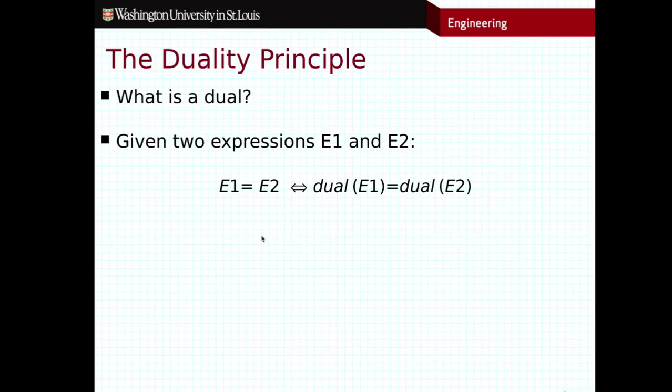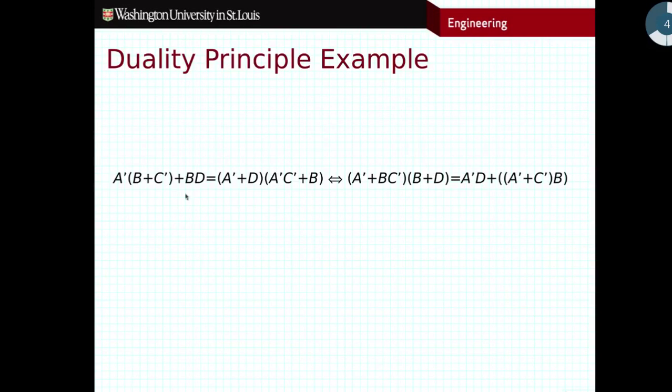And so what this allows us to do is construct the duality principle that states if I have two expressions that are equivalent to one another, expression one is equivalent to expression two, then the dual of expression one is also equivalent to the dual of expression two. Let me show you an example of how this works. On the left side here, I see an expression, A' ANDed with B or C', or B and D. And here I've stated another expression that I'm claiming is equivalent. Now, I'm not going to take the time to prove that these two are equivalent, although that is an interesting topic that we are going to discuss a little bit later. But right now, assume that these two statements are in fact equivalent, and they are.